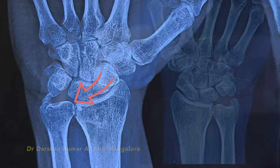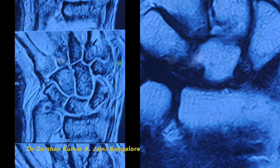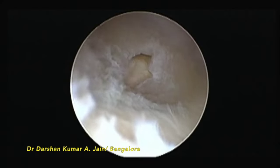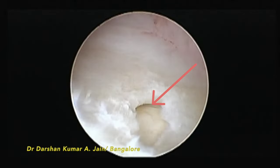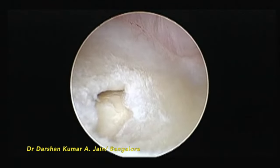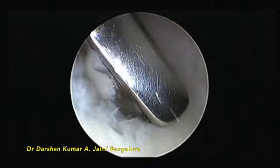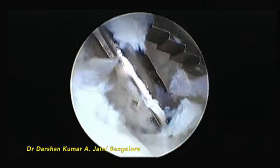In this example we show a malunited distal radius fracture and a prominent ulnar. The MRI shows secondary changes in the lunate and the triquetrum, slight edema, and arthroscopy shows damage to the TFCC central part along with a small injury to the ulnar head as well.